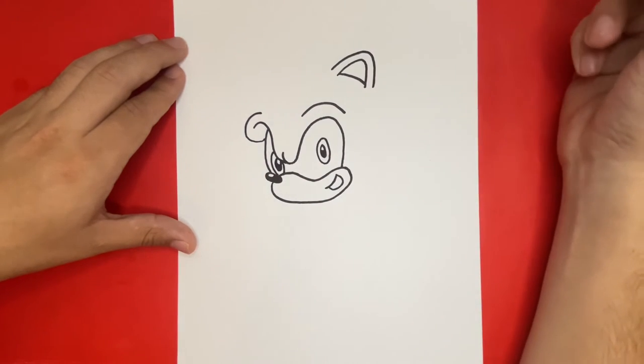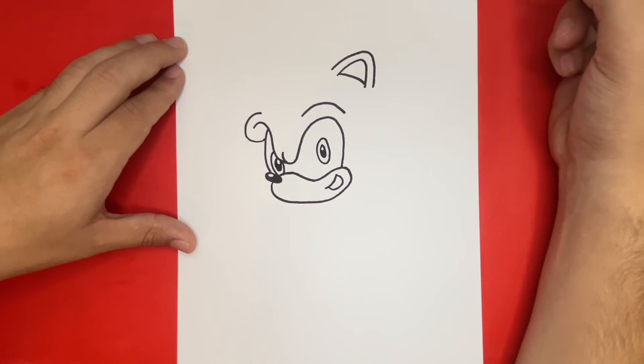Now we'll draw the teeth by making small lines. We probably could have done this step a little bit earlier on, but now it's okay.